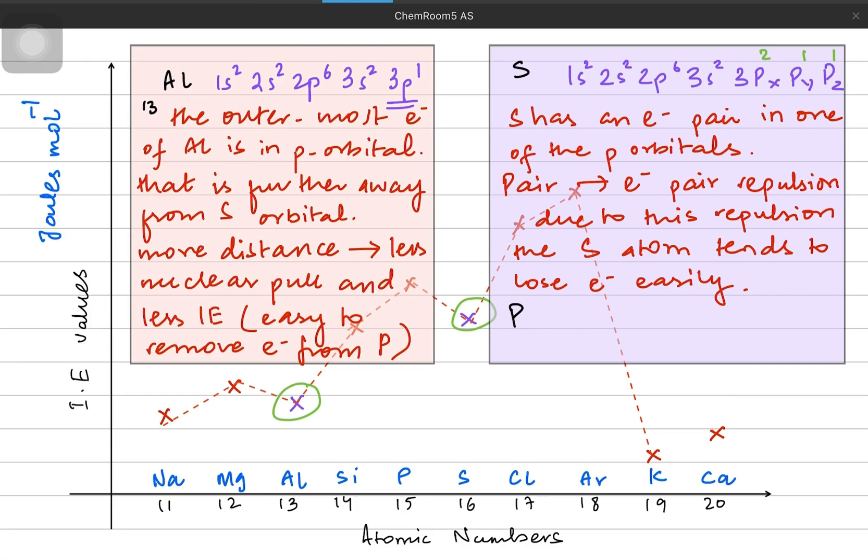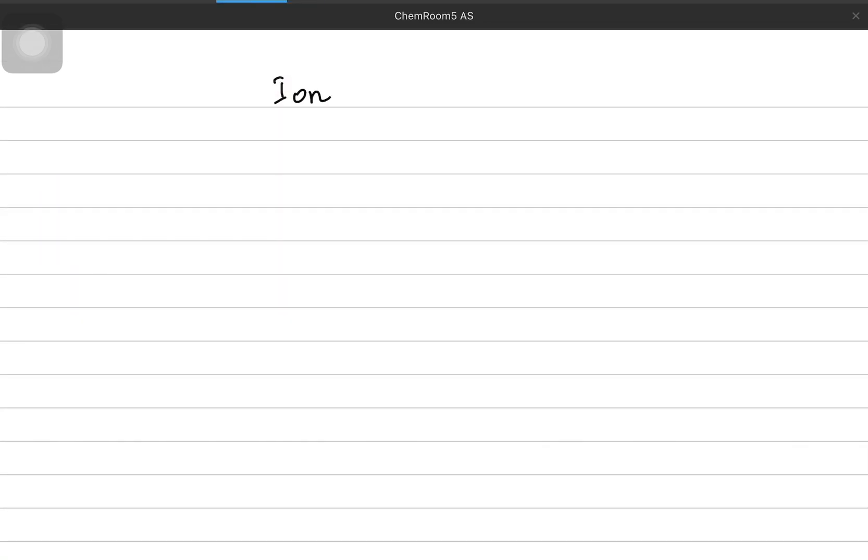Let's write the configuration of phosphorus to compare and understand this more deeply. Initial configuration is same, but then in the three p orbitals, phosphorus has one electron in each, which means unpaired electrons. This is a very stable situation. So sulfur prefers to lose the electron and obtain three unpaired electrons in the p orbitals, exactly like the phosphorus atom. That is why even sulfur has a lower ionization energy than expected.